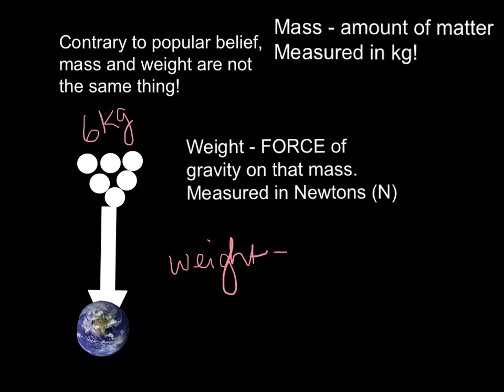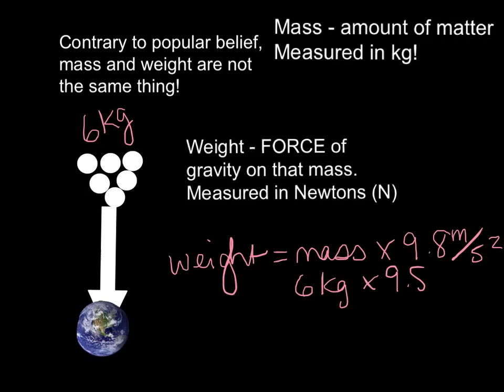we take our mass, and on Earth, we multiply by 9.8, which is the acceleration due to gravity on Earth. So we take our six kilograms and multiply by our 9.8 meters per second squared, and that would give us 58.8 newtons.